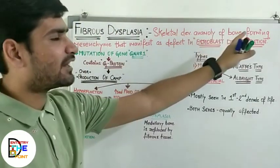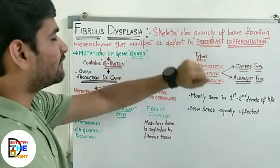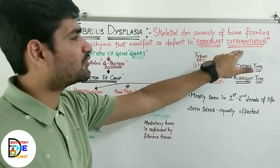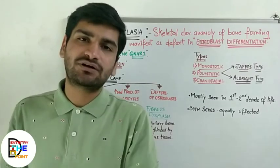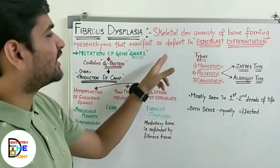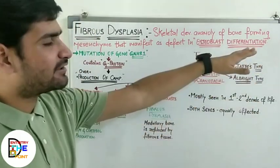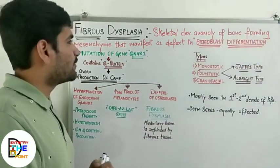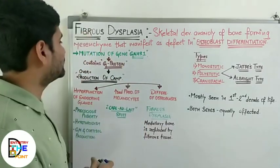Fibrous dysplasia is a skeletal developmental anomaly of bone-forming mesenchyme, which manifests as a defect in osteoblast differentiation and osteoblast maturation. Now, regarding the etiology or the reason behind fibrous dysplasia — there is a mutation in the GNAS1 gene.